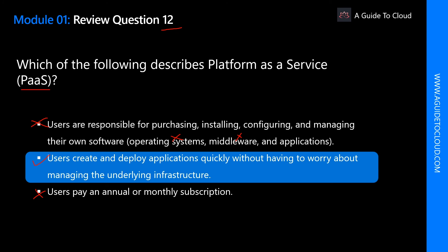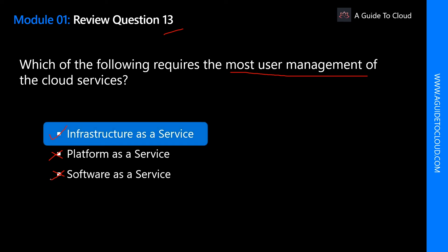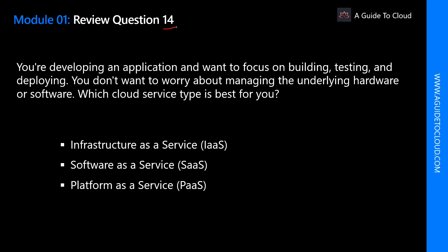Question 13: Which of the following requires the most user management of cloud services? Infrastructure as a service is absolutely correct because with IaaS the user has to manage the operating system, application layer, data layer, middleware, and more. Platform as a service is not correct — in PaaS you don't have to worry about the underlying infrastructure. Software as a service is also not correct — SaaS is delivered through an annual or monthly subscription model where you don't have to manage anything. The correct answer is infrastructure as a service.